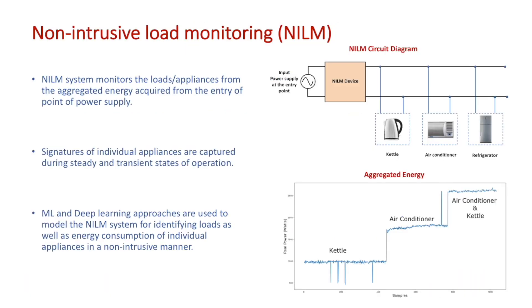The NILM system monitors the events and energy consumption of the loads from the aggregated energy acquired from the entry point of the power supply. In this process, we first need to learn the signatures of the individual appliances that are captured during the steady state and transient states of operation. Then we feed the features captured from these states to machine learning and deep learning approaches to model the system for identifying loads and estimating the energy consumption of individual appliances in a non-intrusive manner.